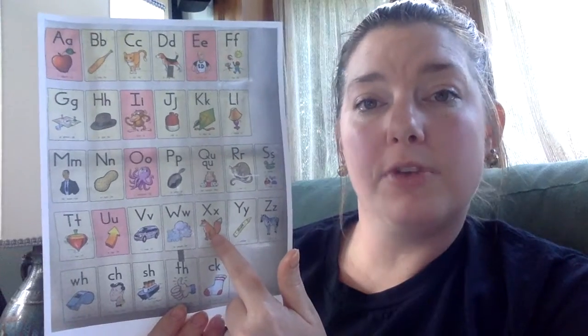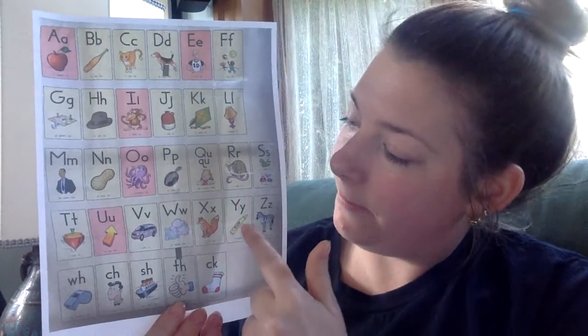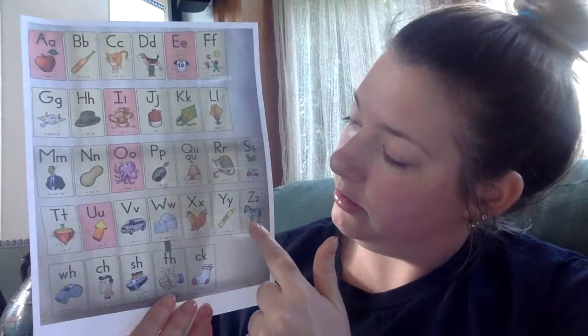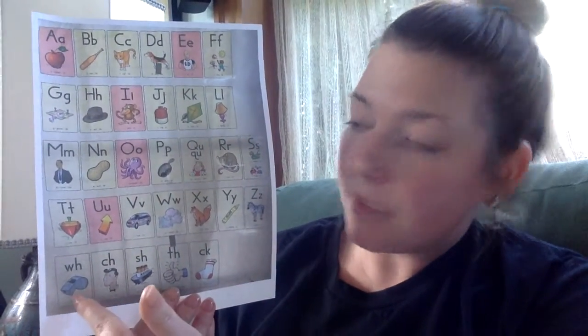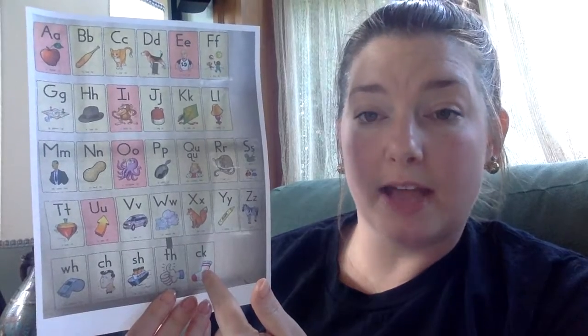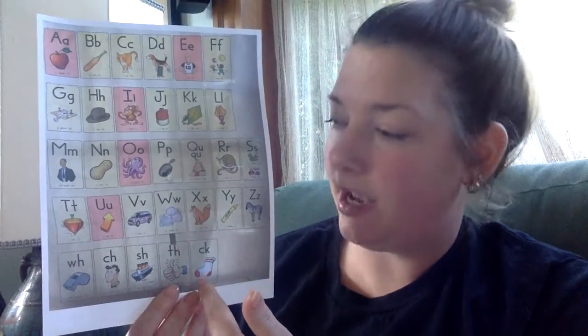X, fox, csss. Y, yellow, ya. Z, zebra, zzz. And here we have our digraphs. That's two letters that make one sound.